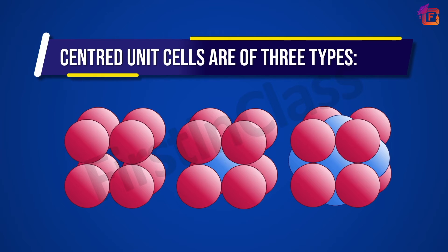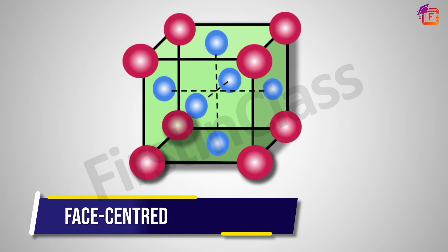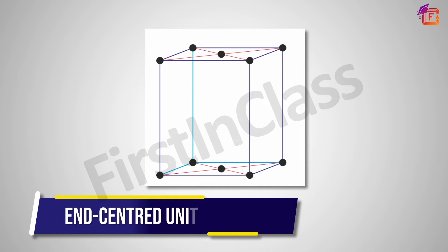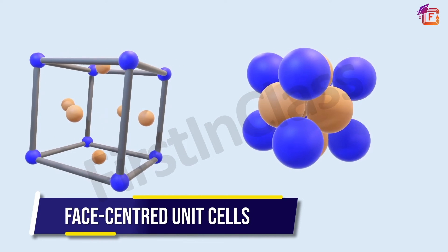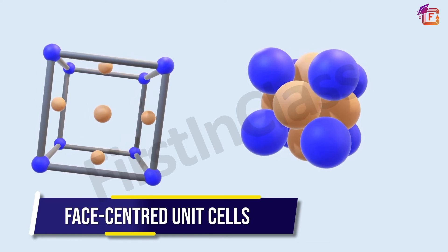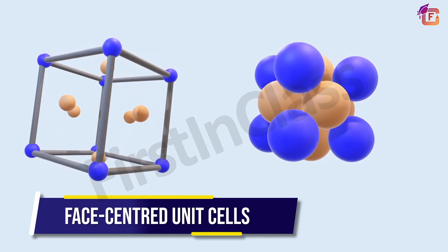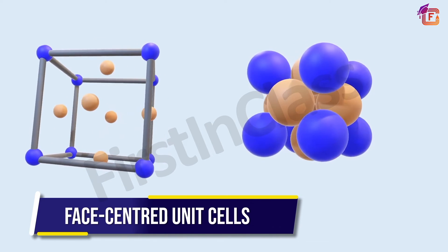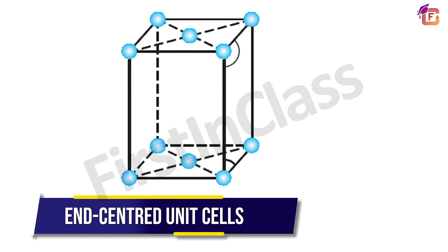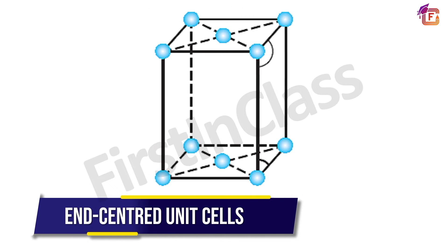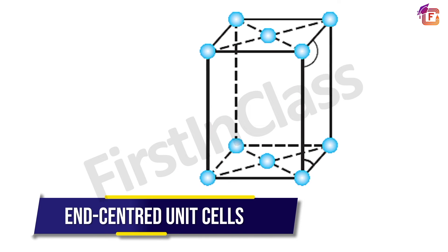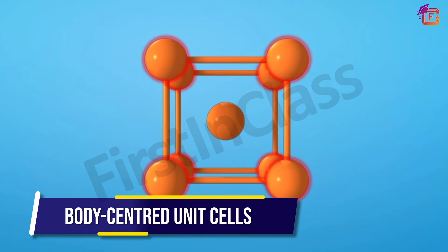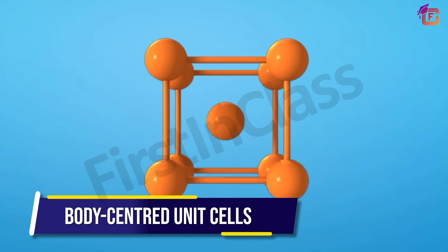Centered unit cells are of three types: face-centered unit cells, end-centered unit cells, and body-centered unit cells. Face-centered unit cells are those in which particles are present at opposite faces also, along with particles at the corners. Body-centered unit cells are those in which particles are present at the body center also, along with particles at the corners.